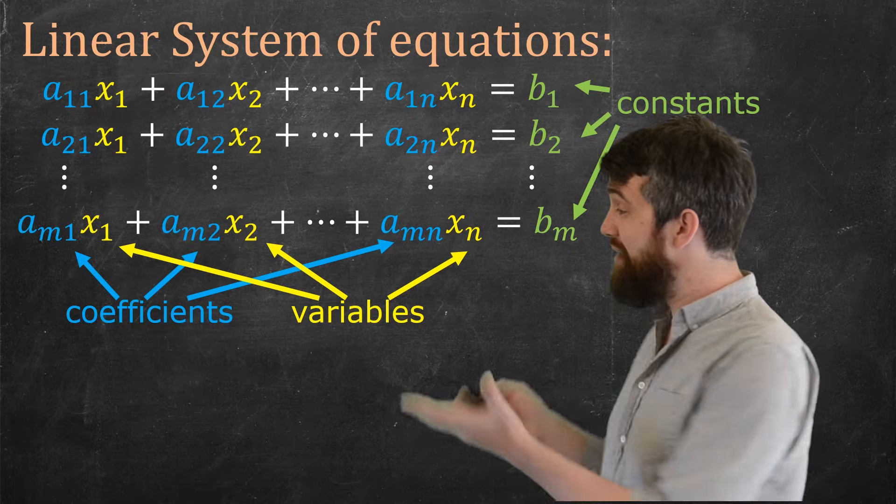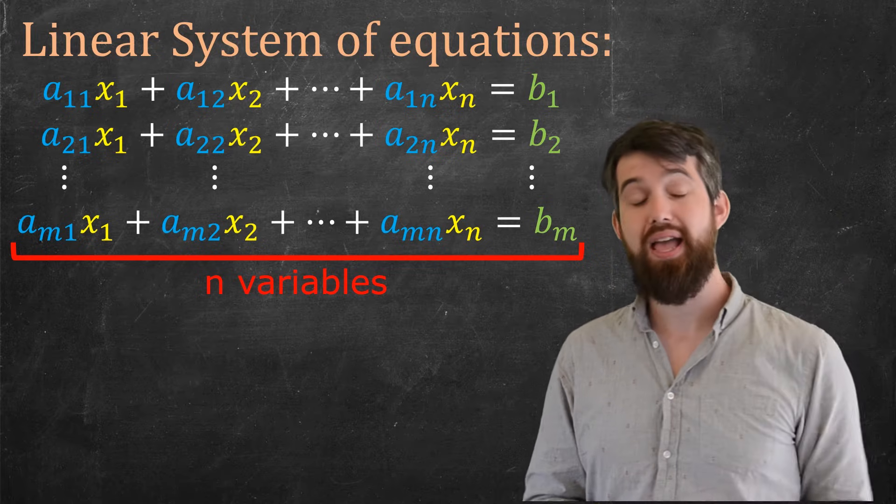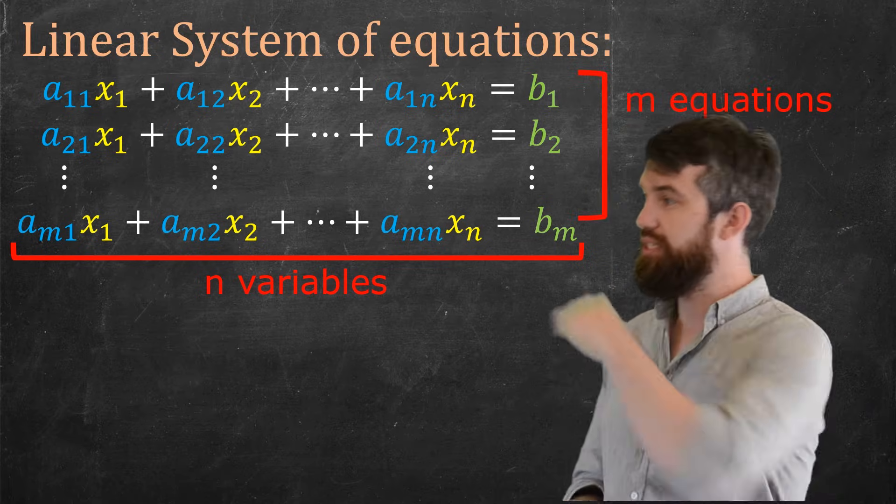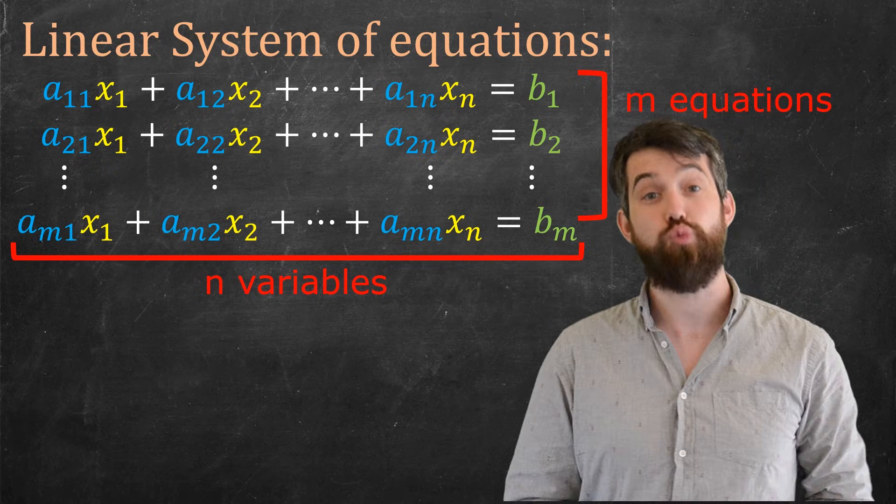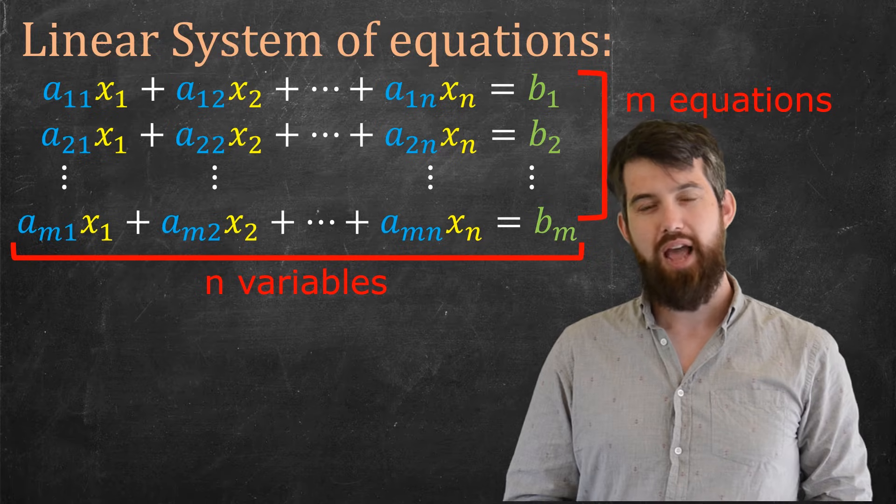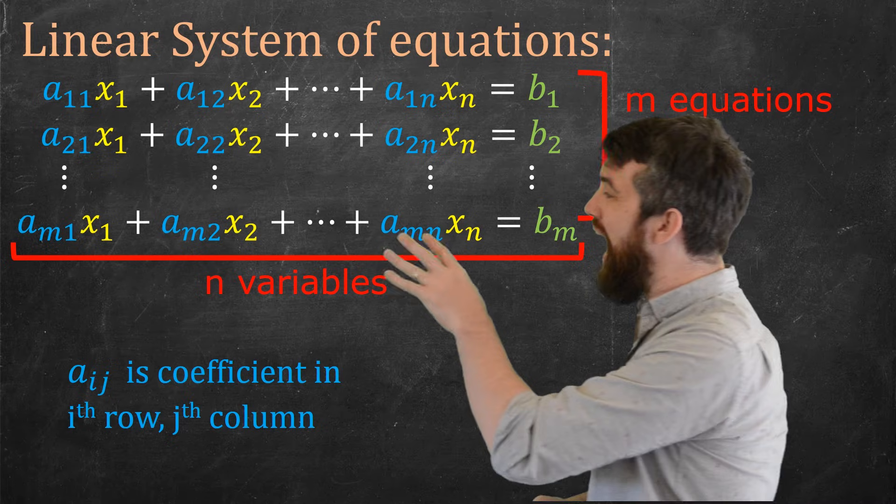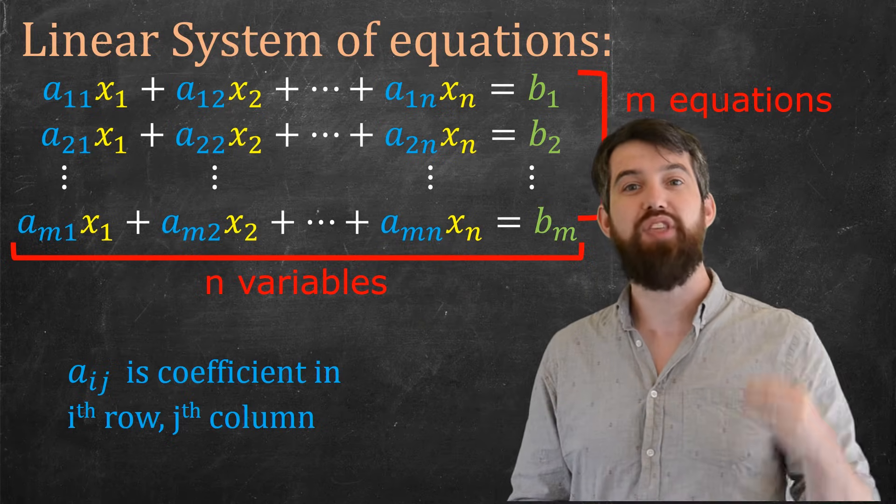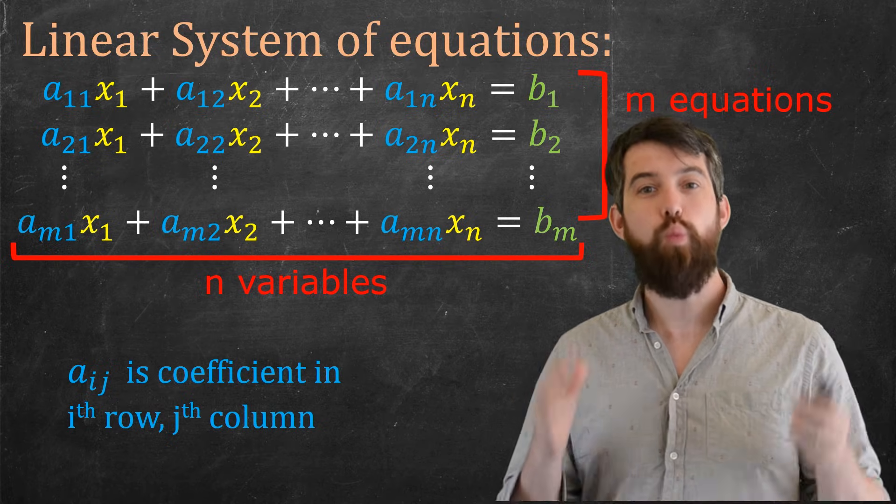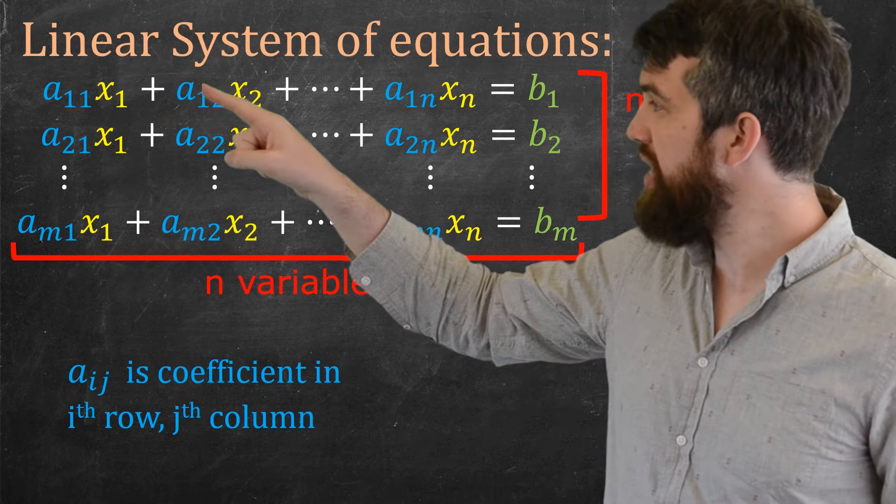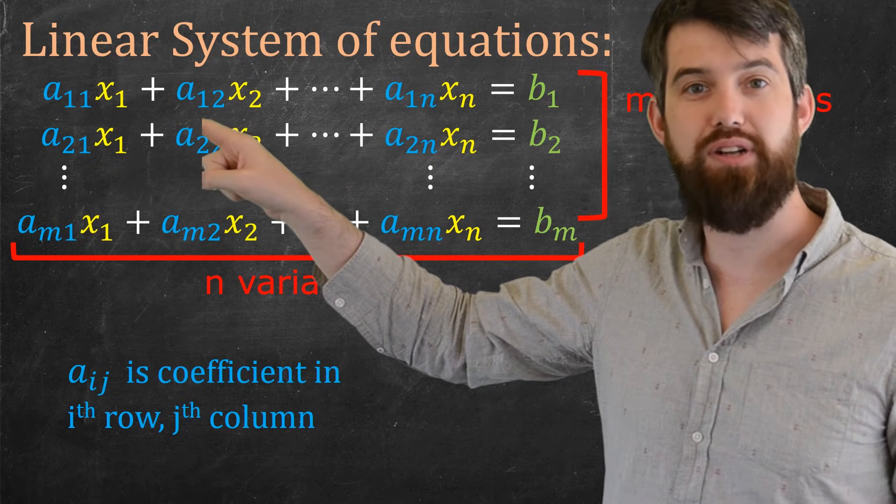So what do I have in this system? I have n different variables, my x1 down to my xn. And I have m different equations, b1 down to bm, enumerating the different rows in my linear system. And then the way to refer to the AIJ notation is that AIJ represents the i-th row and the j-th column. So for example, a12, well, that's going to be this one right here. It's the first row and the second column when I reference a12.